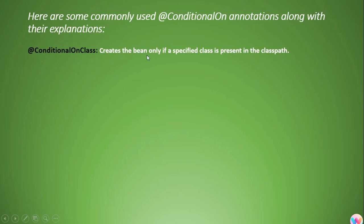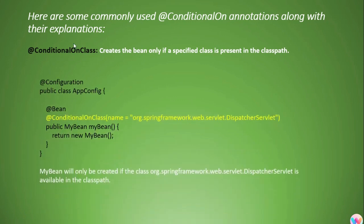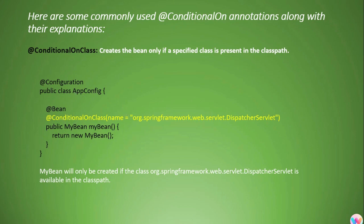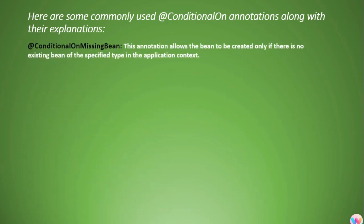The third is @ConditionalOnClass — it will create the bean only if a specified class is present in the classpath. Here, MyBean will only be created if the DispatcherServlet class is present in the classpath. You can use any class — for example, if you have a class called ABC, then if that ABC class is present, only then should the bean be created. This is achieved using the @ConditionalOnClass annotation.